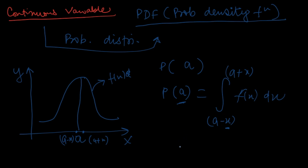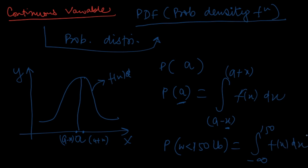We always have to calculate the probability over an interval. For example, the probability of weight less than 150 lb is the integral of f(x) from minus infinity to 150. For any continuous function, we always need an interval — we cannot calculate probability at a single point. That is the only restriction and the reason PDF differs from PMF.